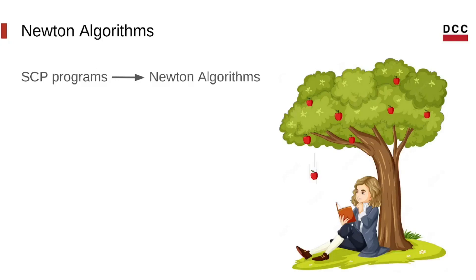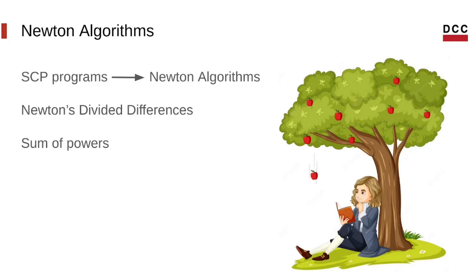We call programs that bear this property the Newton algorithms. These programs can be interpolated using a method called Newton's divided differences, which does polynomial interpolation. This method is very useful for a few reasons: it can easily write the cost of the program as a sum of powers, which is the form humans are most used to, and it is quite cheap as it converges fast to a solution. However, it has the downside of only being able to work with single-variable polynomials, so we can't work with programs that aren't polynomial or that have more than one variable describing their cost. But as we will see later, this is not that much of a problem.